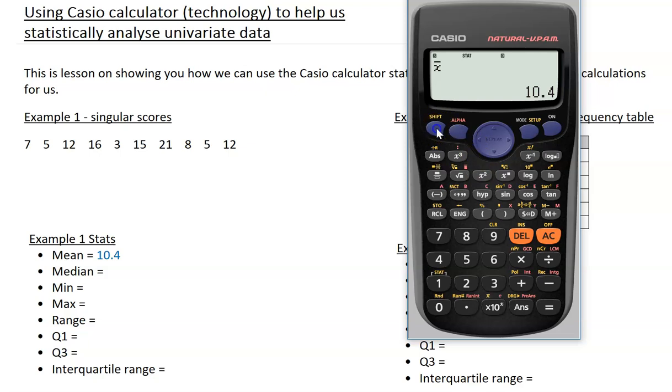To find the median, shift 1 again, and this will be under 5, our min max. And you'll see we've got option 1 is our min score, so our lower score. Option 2 is our max or our higher score. Q1 is our first quartile, 4 is our median, and option 5 is our third quartile or Q3. The second step we want here is the median, so I'm going to select option 4, hit equals, and our median is 10.